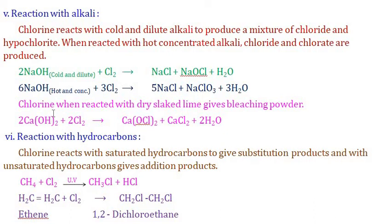Chlorine reacts with dry slaked lime (calcium hydroxide) to give bleaching powder (calcium oxychloride, Ca(OCl)Cl). Chlorine gas reacts with calcium hydroxide to form calcium oxychloride along with calcium chloride and water molecules.